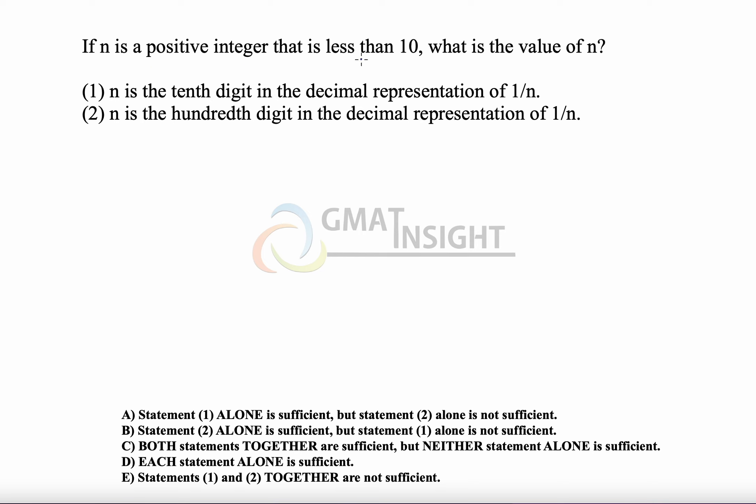If n is a positive integer that is less than 10, what is the value of n? We have to find the exact value of n. The first statement says n is the 10th digit in the decimal representation of 1 upon n.